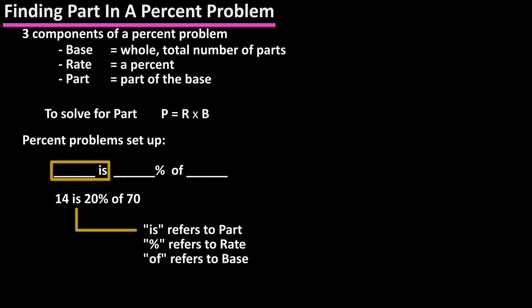In this setup, "is" refers to the part, the percent sign refers to the rate, and "of" refers to the base. So "14 is" means 14 is the part, "20%" with the percent sign is the rate, and "of 70" means the base.